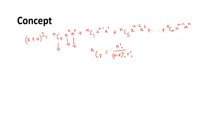Another observation: when x is raised to the power n, the number of terms ranges from 0 to n, so the total number of terms in the expansion is n + 1. This is the basic concept of binomial theorem.